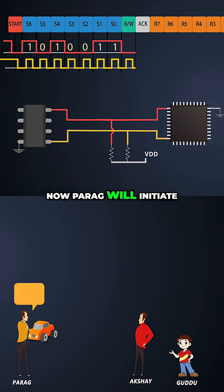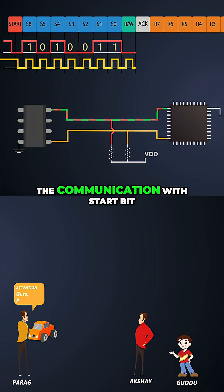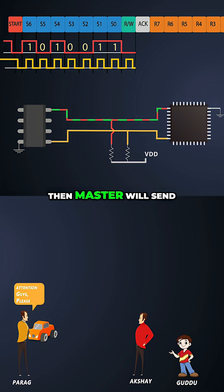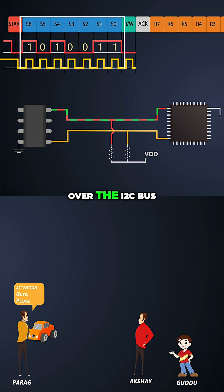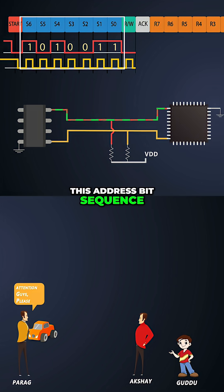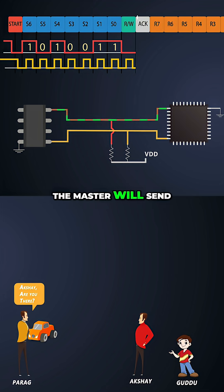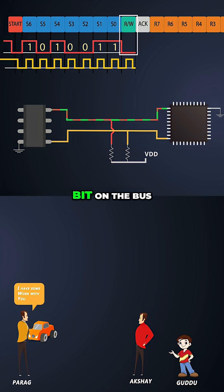Now Parag will initiate the communication with a start bit. Then the master will send a 7-bit address over the I2C bus — this address bit sequence is 7 bits of 1s and 0s. After that, the master will send a read or write bit on the bus.